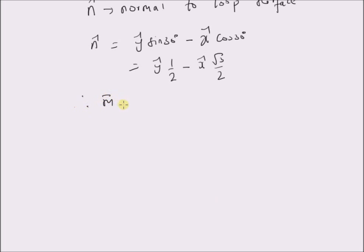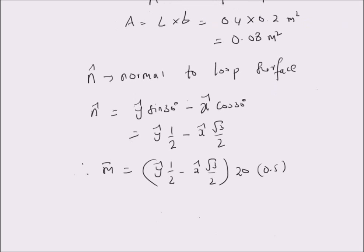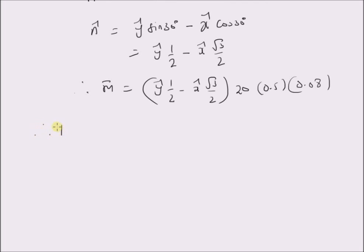So the magnetic moment m-bar is equal to [y-cap (1/2) minus x-cap (√3/2)] multiplied by N = 20, current = 0.5 amperes, and area = 0.08 square meters. Therefore, the torque is given by m-bar cross B-bar, which equals [y-cap (1/2) minus x-cap (√3/2)] times 20 times 0.5 times 0.08, cross product with y-cap 1.2 tesla.